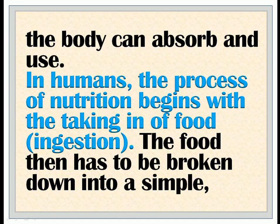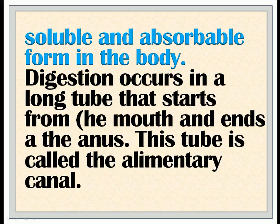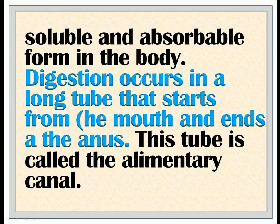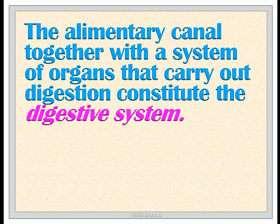In humans, the process of nutrition begins with the taking in of food — ingestion. The food then has to be broken down into a simple, soluble, and absorbable form in the body. Digestion occurs in a long tube that starts from the mouth and ends at the anus. This tube is called the alimentary canal. The alimentary canal, together with a system of organs that carry out digestion, constitutes the digestive system.